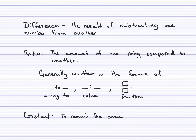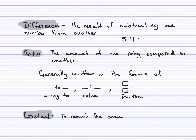The first concept is the word 'difference.' A difference is the result of subtracting one number from another. When you deal with slope, what matters is just the resulting number from subtracting. For example, 5 minus 4 gives a difference of 1, and if you switch that around, 4 minus 5 gives negative 1.